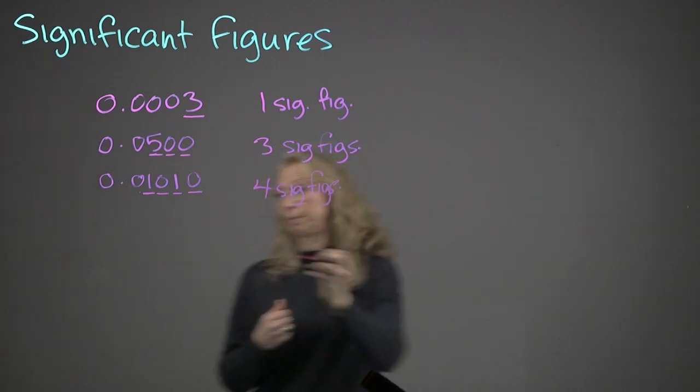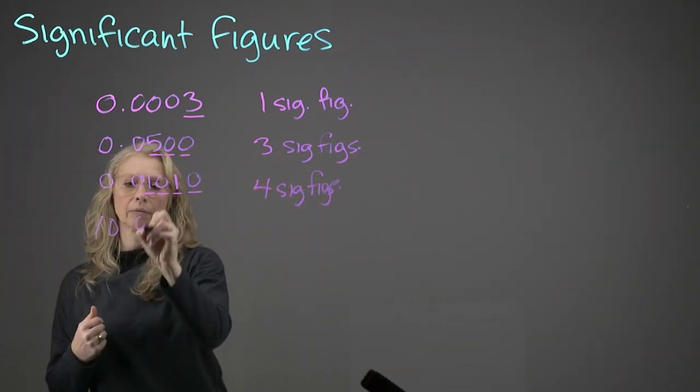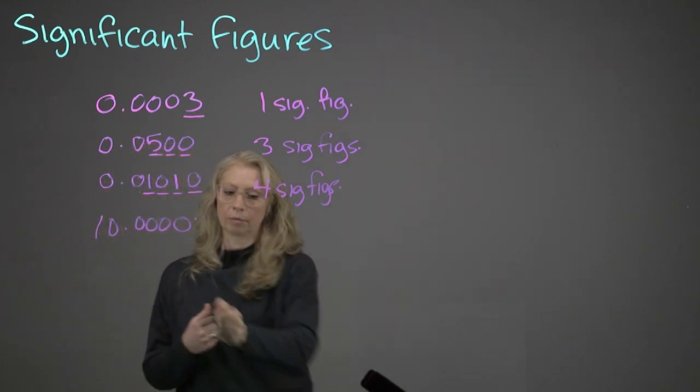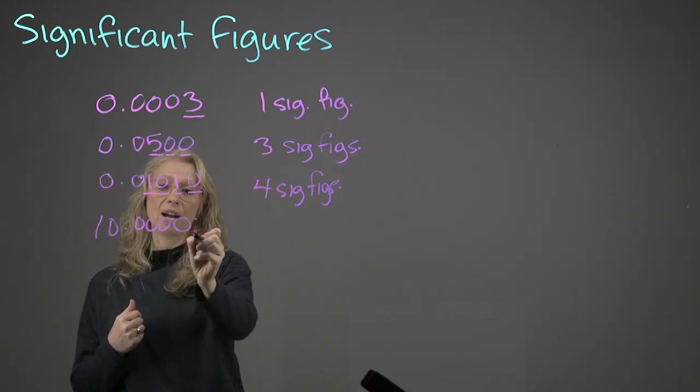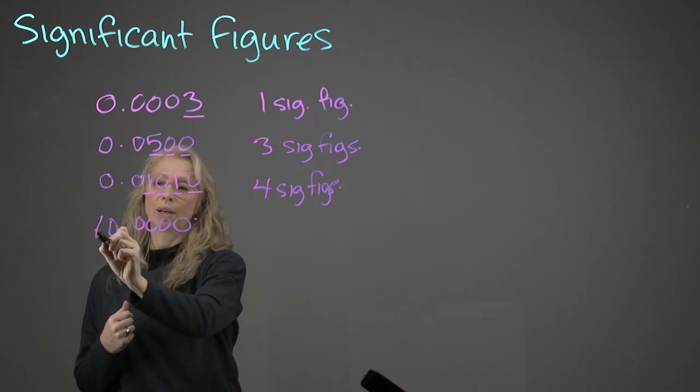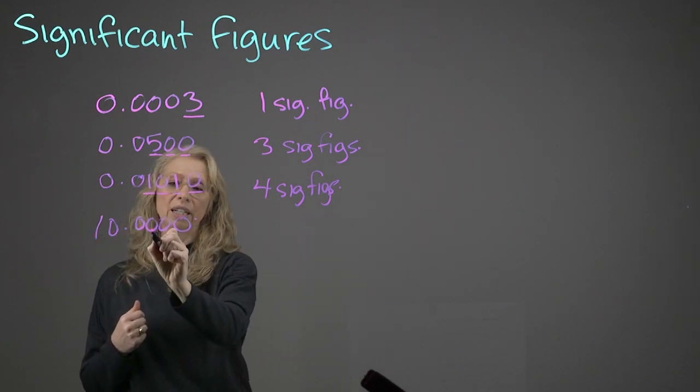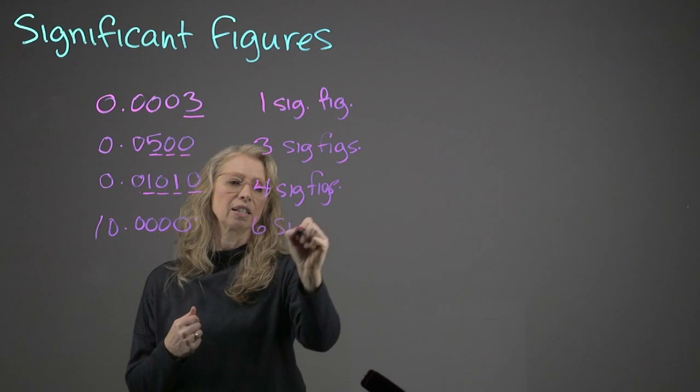What about this number? Now, only trailing zeros. One, two, three, four, five, six. Six sig figs.